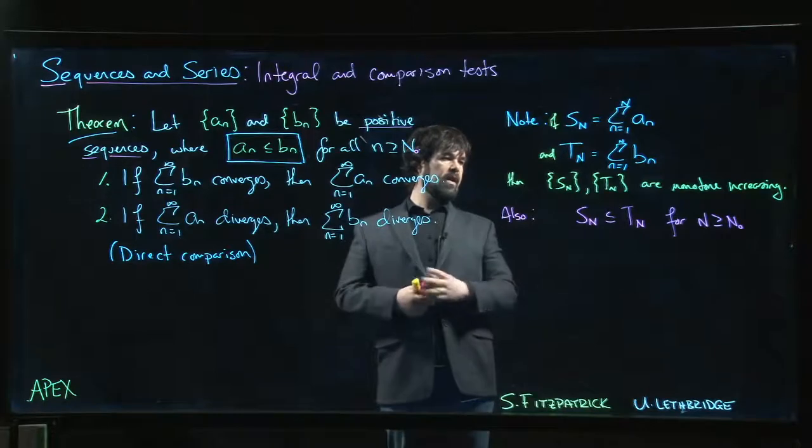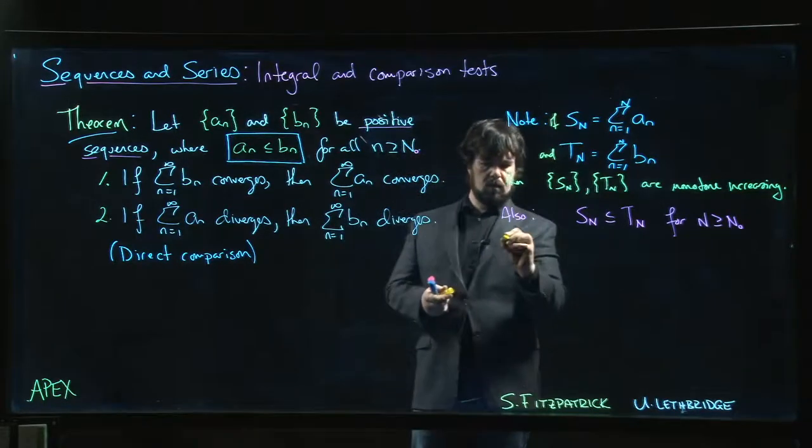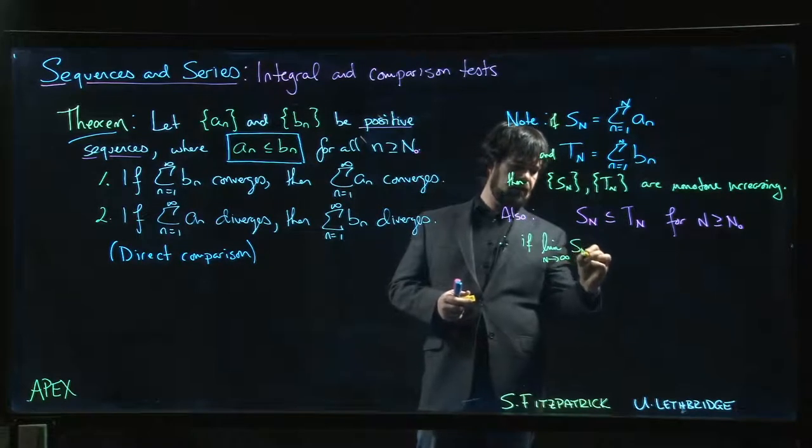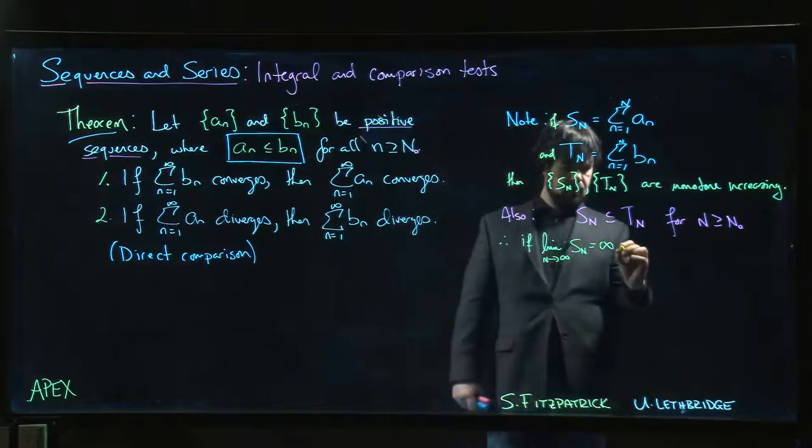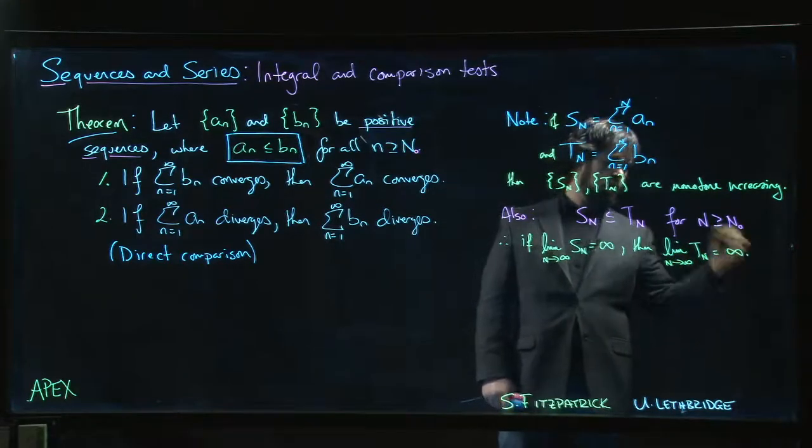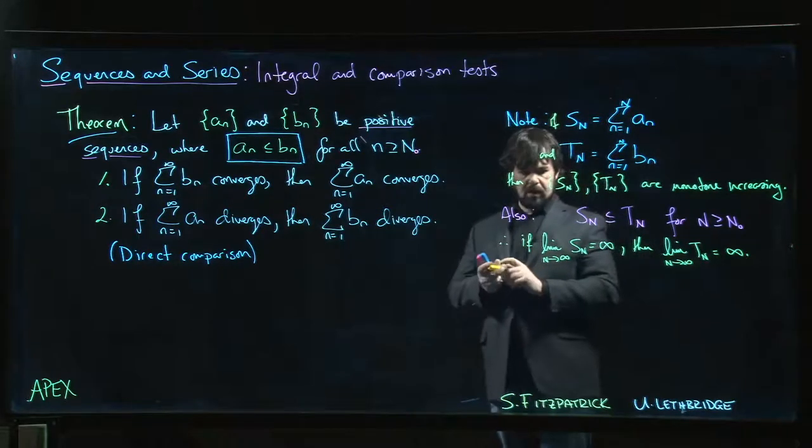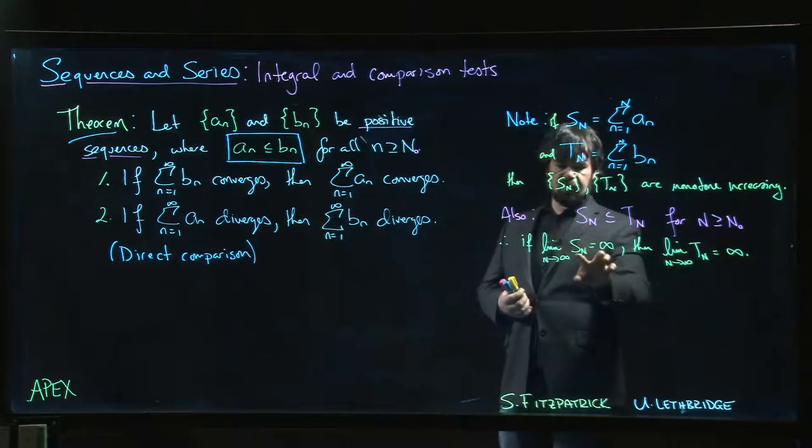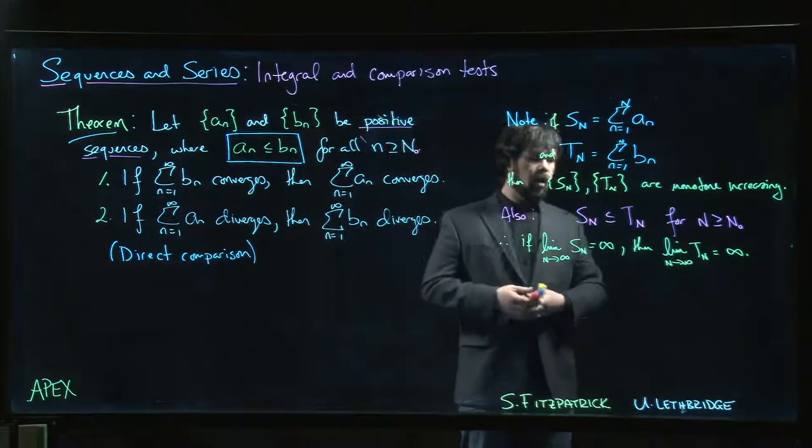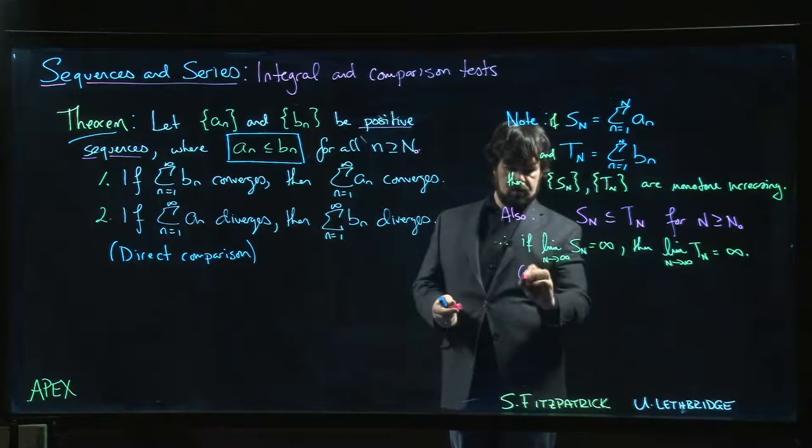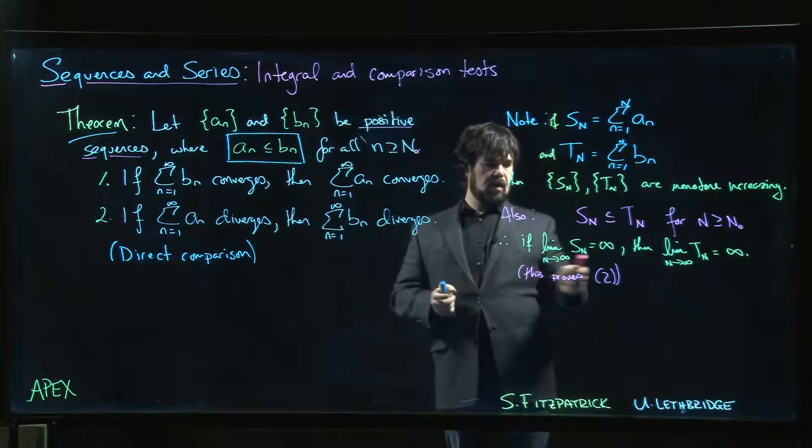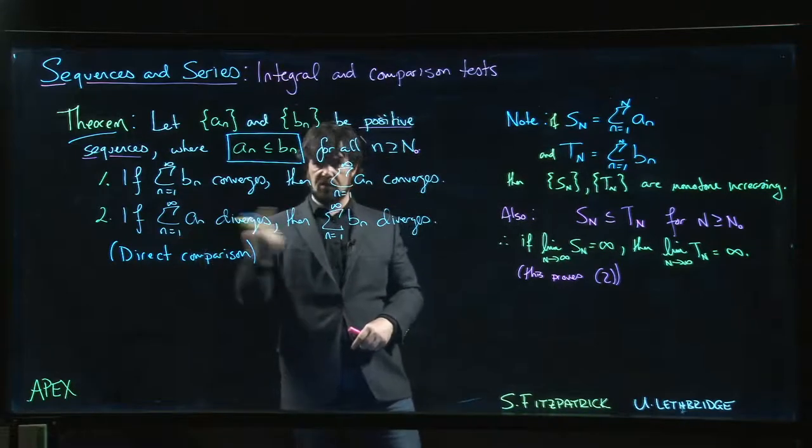So what that tells me is that if the limit as n goes to infinity of S_n is infinity, then the limit as n goes to infinity of T_n must also be infinity. If we have this inequality for all n, this quantity is always bigger than that quantity. If this is becoming infinite, this one must also become infinite. You can prove that straight from the definition of the limit if you want. And by the way, this proves the second part of the theorem. If S_n goes to infinity, that's saying that this series diverges, which tells us that this one diverges.